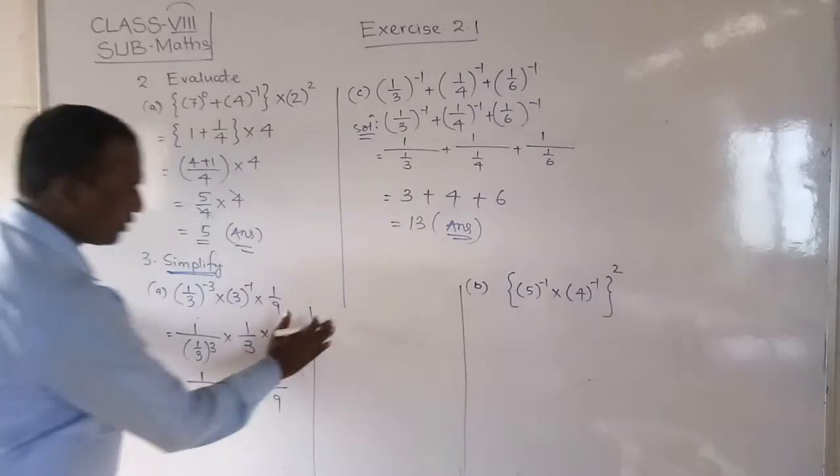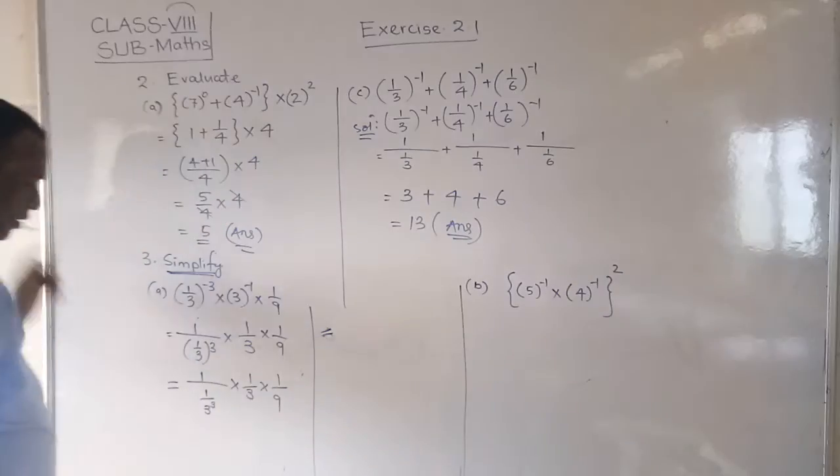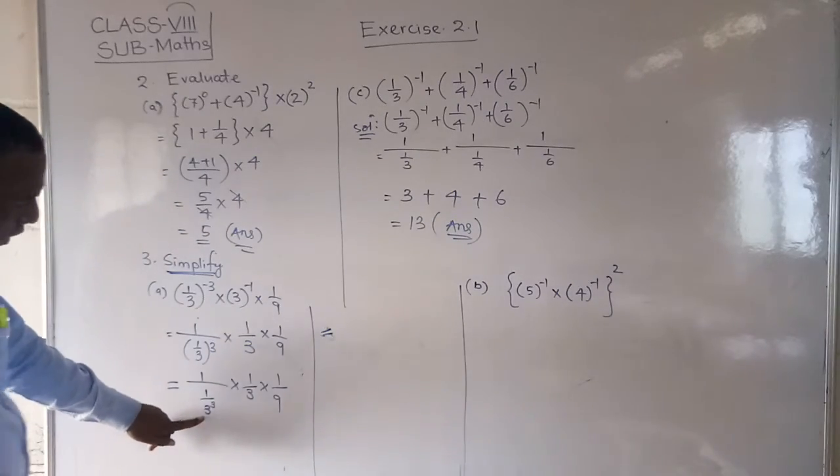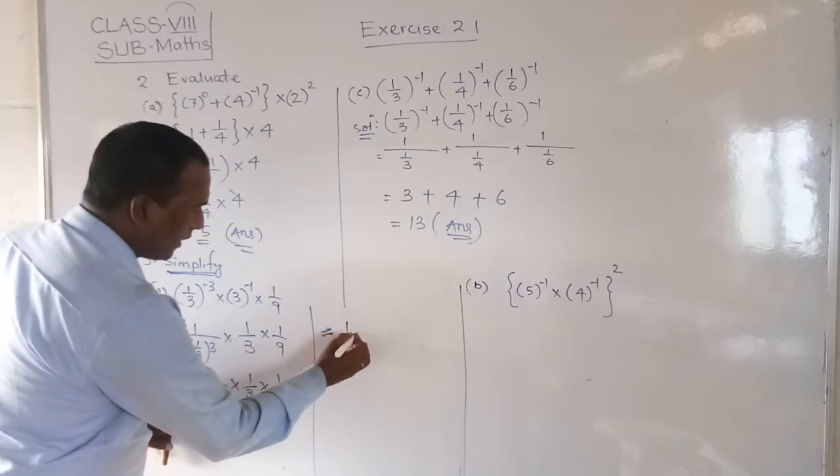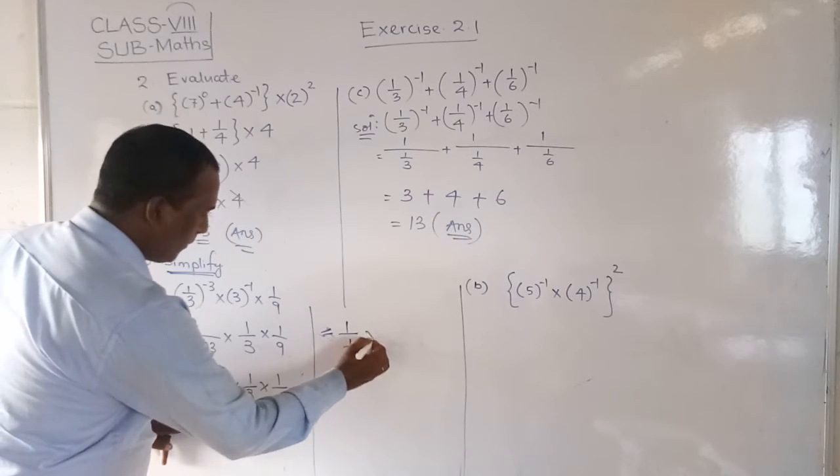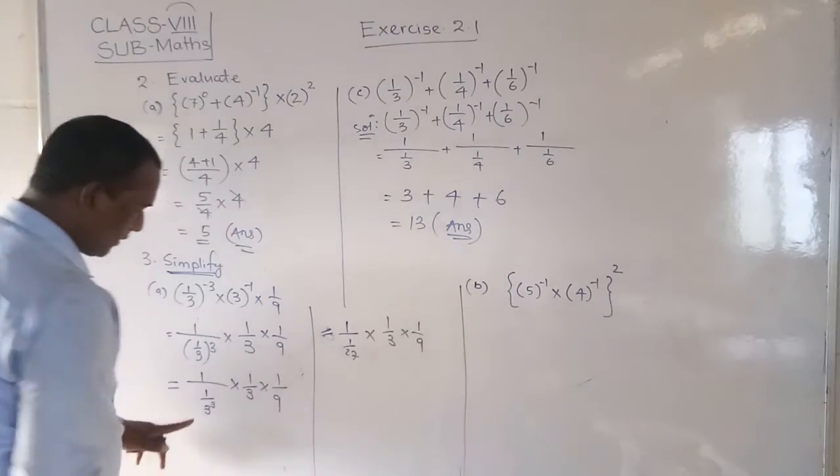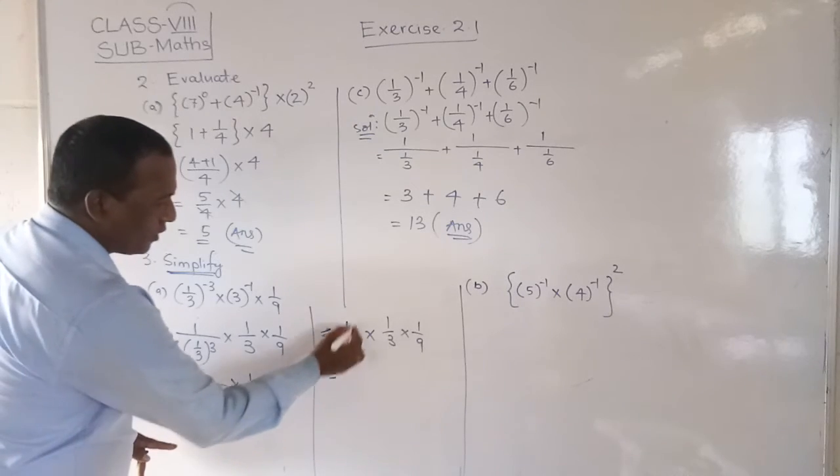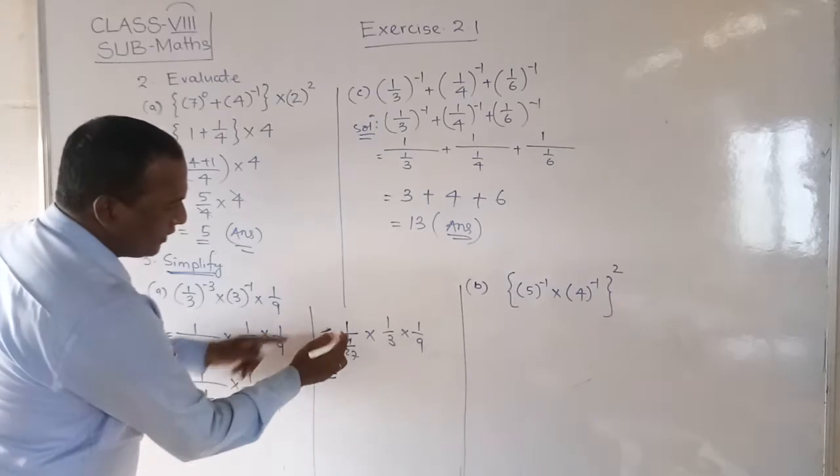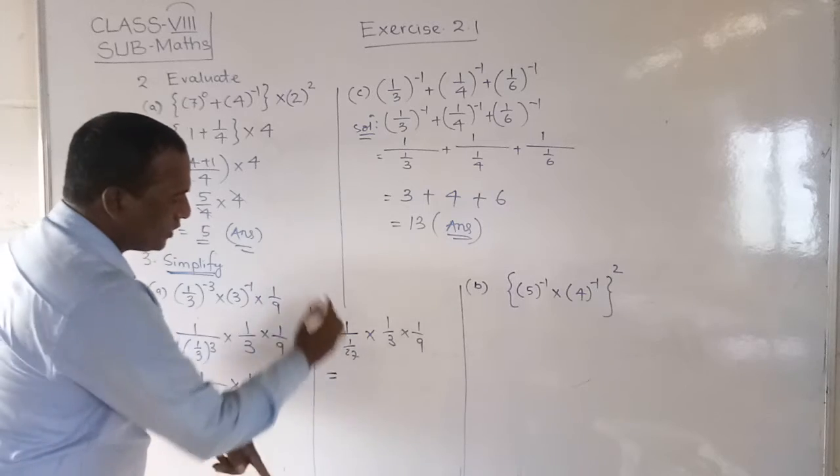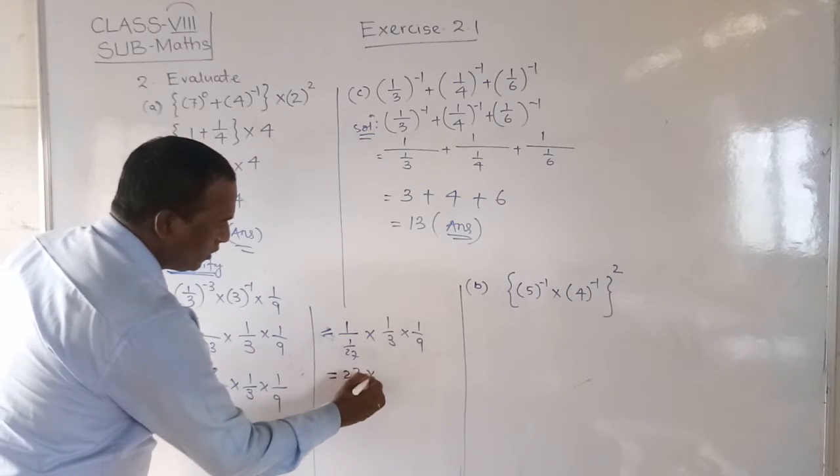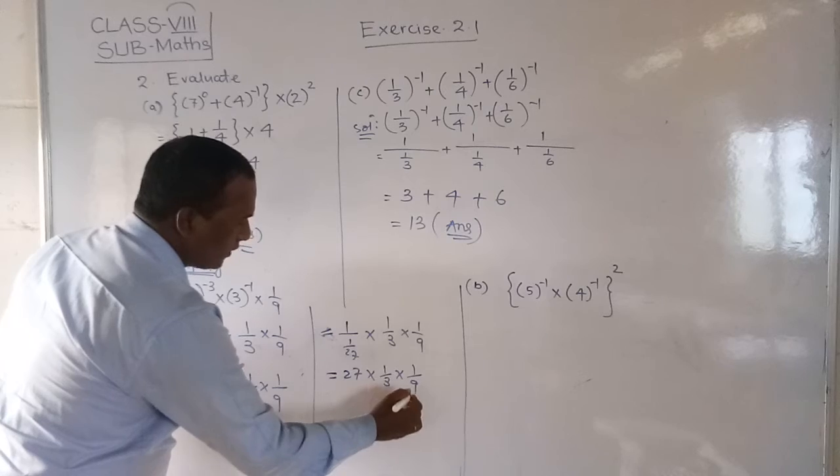1 by 3 to the power 3 means 3 to the power 3, into 1 by 3, into 1 by 9. Here I am writing. This is equal to 1 by 27, into 1 by 3, into 1 by 9. If you do 1 division, 1 by 27, then it will change. So 27 into 1 by 3, into 1 by 9.